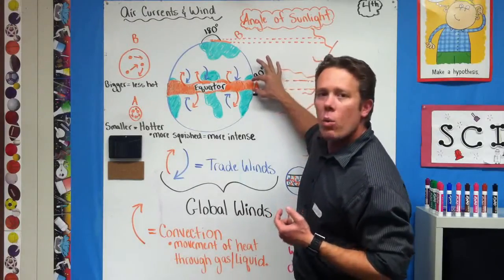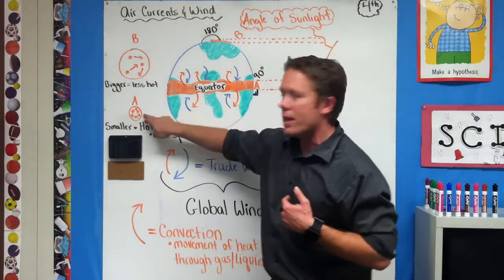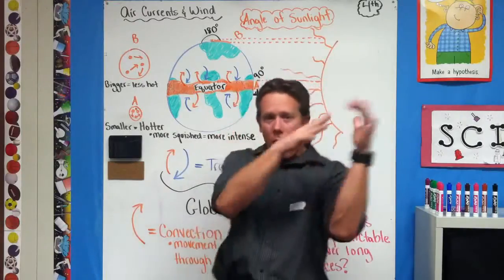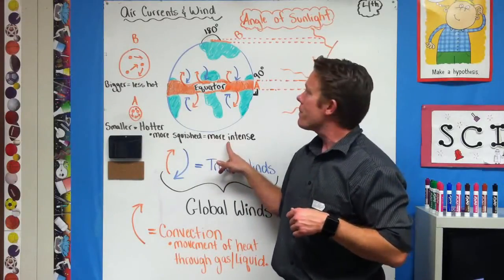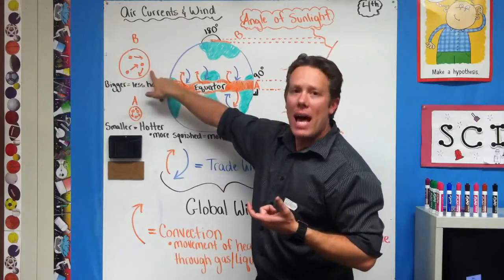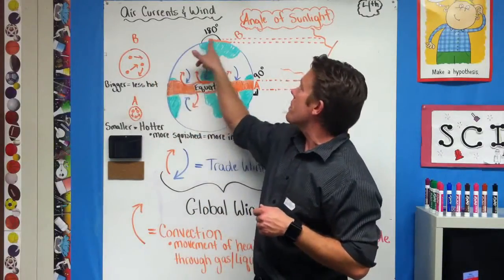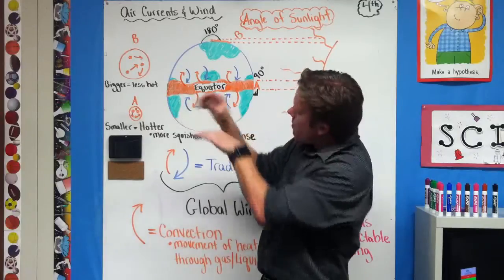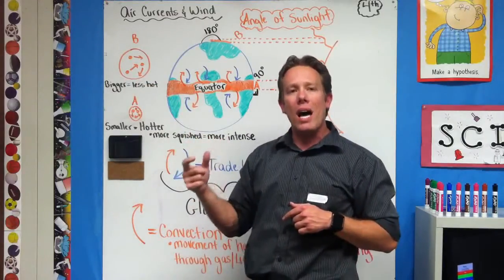The intensity of the sun's rays in A is going to be a lot stronger because it's not as thick. When the sun's rays hit the Earth, it's going to be a lot more intense because look at how small it is. Smaller equals hotter because the warm air molecules are moving around in a lot smaller area, so it's more intense. The intensity of the sun's rays at B is going to be a lot less because the ray is covering a lot bigger surface area. Because it's stretched out more, B is going to be a lot less hot.